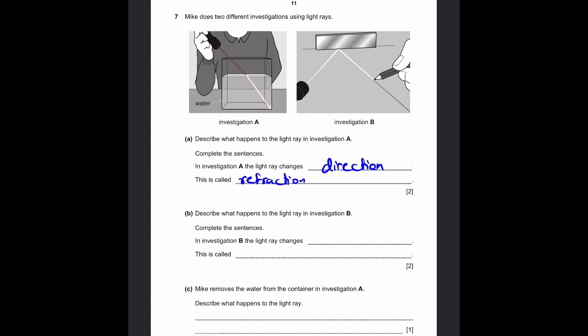Part B. Describe what happens to a light ray in investigation B. For investigation B, it also changes direction, as you can clearly see. And this is called, not refraction, but reflection. Because it is reflected off a mirror. It's not changing a medium. It's in the same medium, but it's just reflected off a reflective surface, like a mirror.